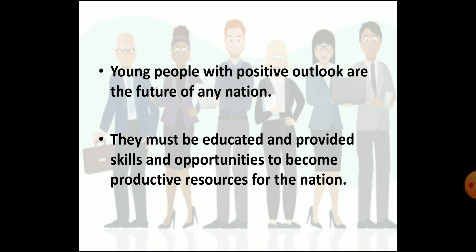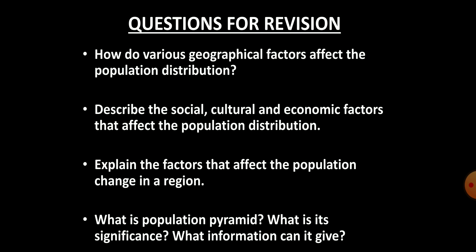We have now come to the end of the chapter. Here are some questions to check your learning. First, how do various geographical factors affect population distribution? Second, describe the social, cultural and economic factors that affect population distribution. Third, explain the factors that affect population change in a region. Fourth, what is a population pyramid, what is its significance, and what information can it give?